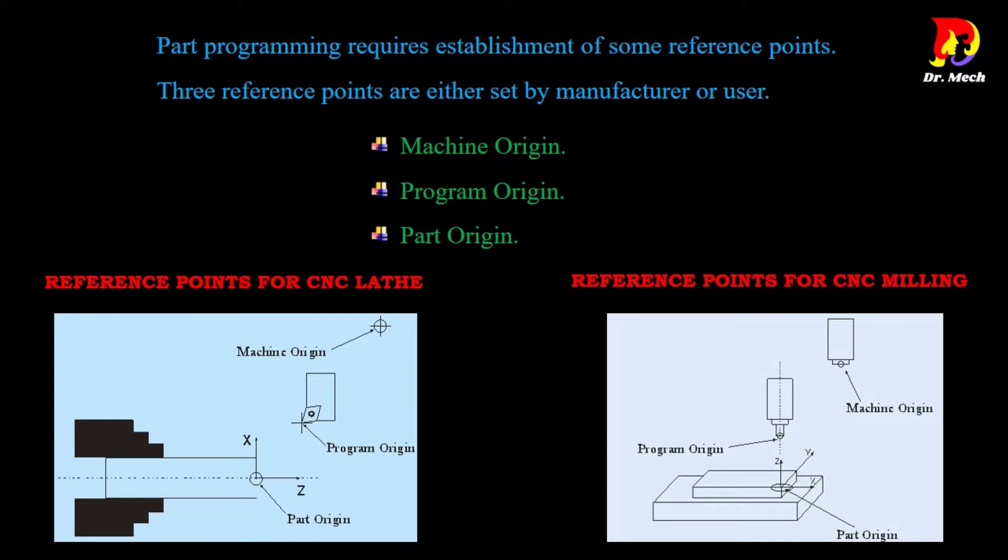Part programming requires establishment of some reference points. Three reference points are either set by manufacturer or user. There are machine origin, program origin, and part origin. Figure one shows reference points for CNC lathe. Figure two shows reference points for CNC milling machine.